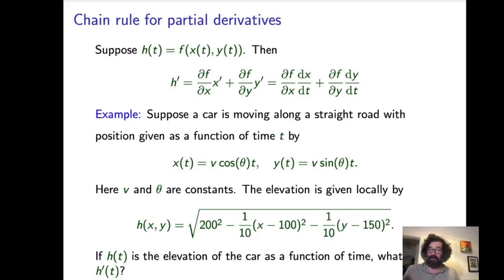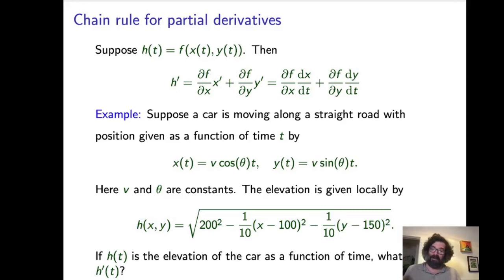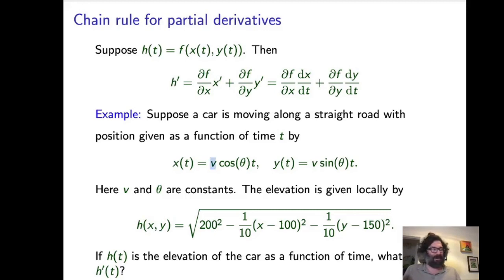However, the elevation changes, and the elevation given by function H depends on position X and Y. What we want to know is the elevation of the car as a function of time — that is, H prime of T. We want to take the derivative of this function H with respect to time. Note that V is really the velocity in the XY plane; the actual velocity accounting for elevation might differ slightly, but this is just an example of applying the chain rule. We have function H, with X and Y as functions of T, and we want the derivative of height as a function of time.